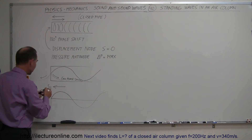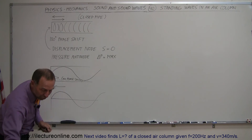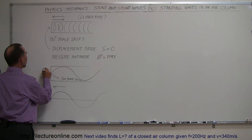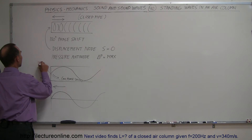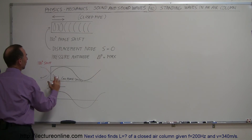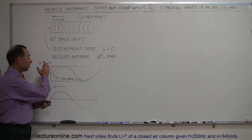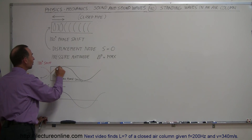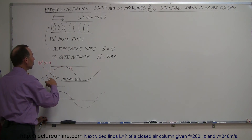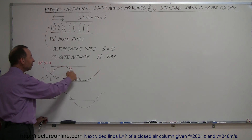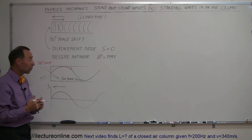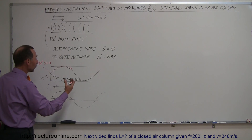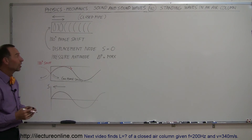But because there's a phase shift — let me use a different color — what happens is we get a 180-degree shift. The wave doesn't continue past the edge of the pipe because there's a wall; it gets bounced back and the reflected wave goes in this direction. Because of the phase shift, it is now exactly in phase with the incoming wave, giving us what we call constructive interference.